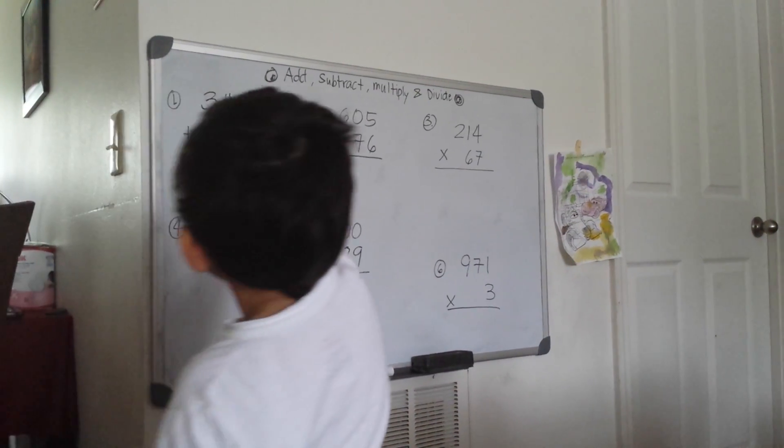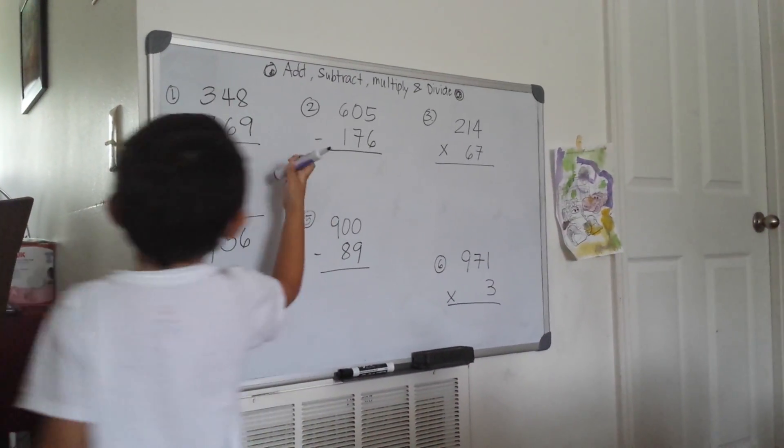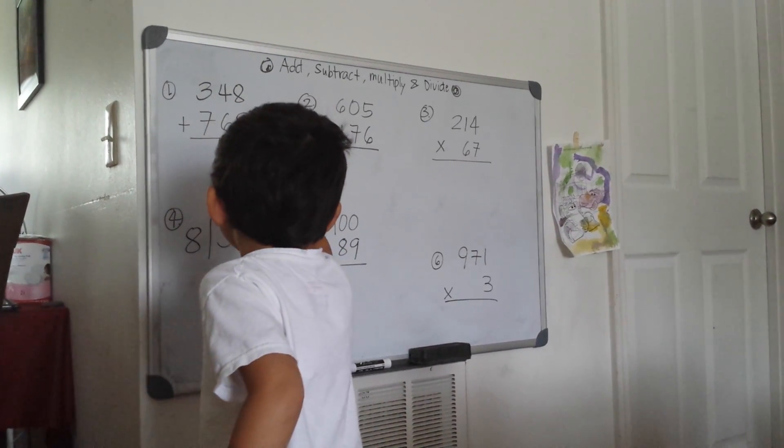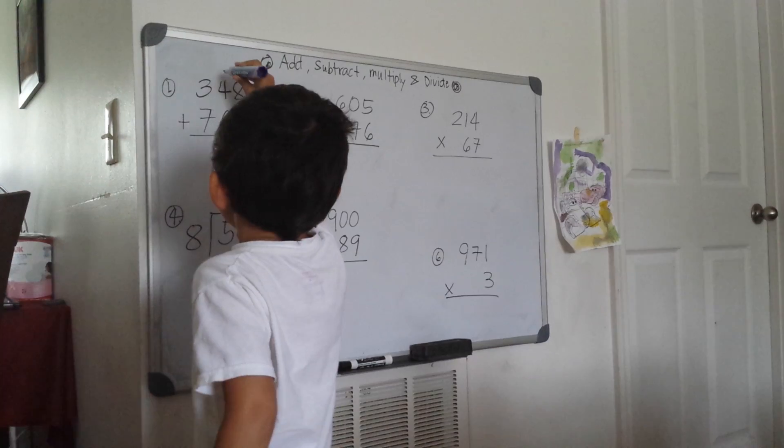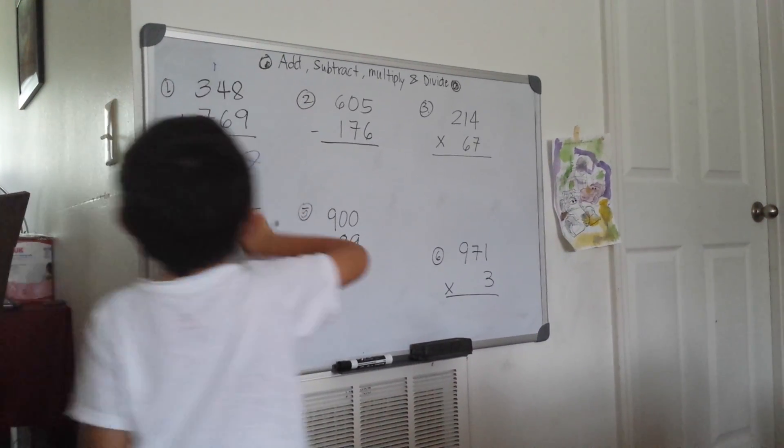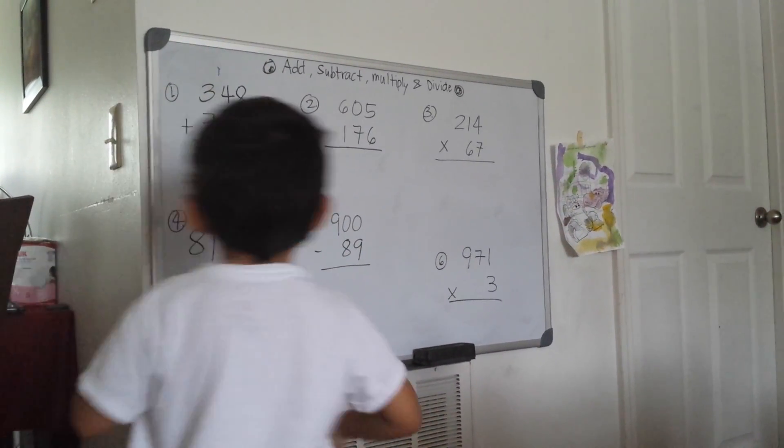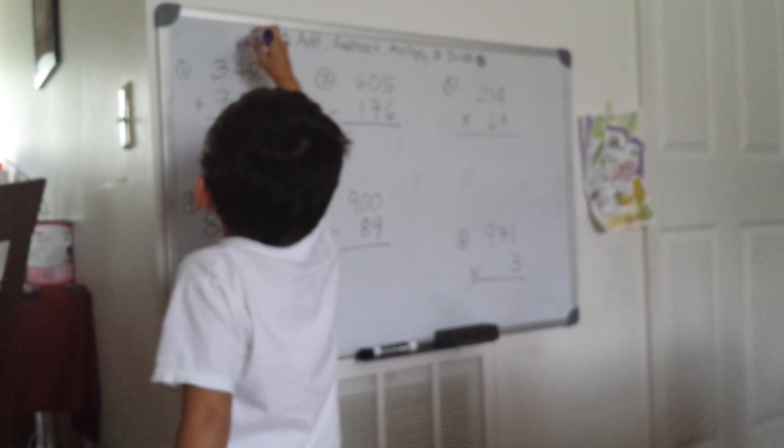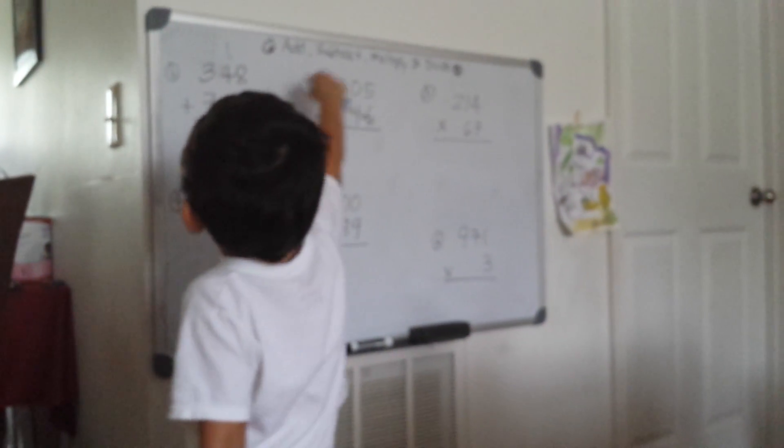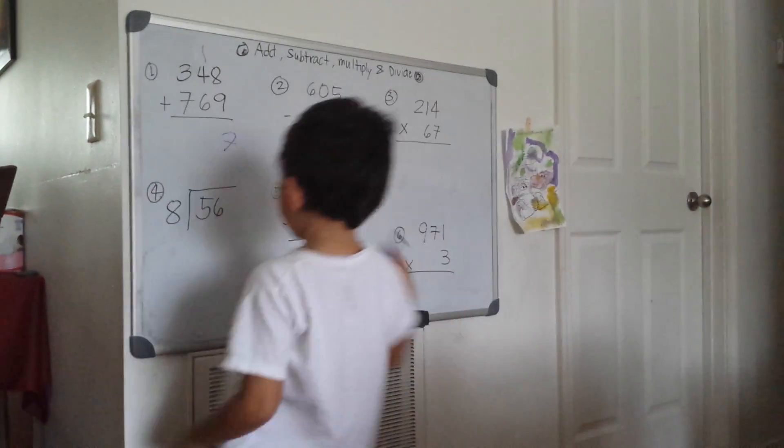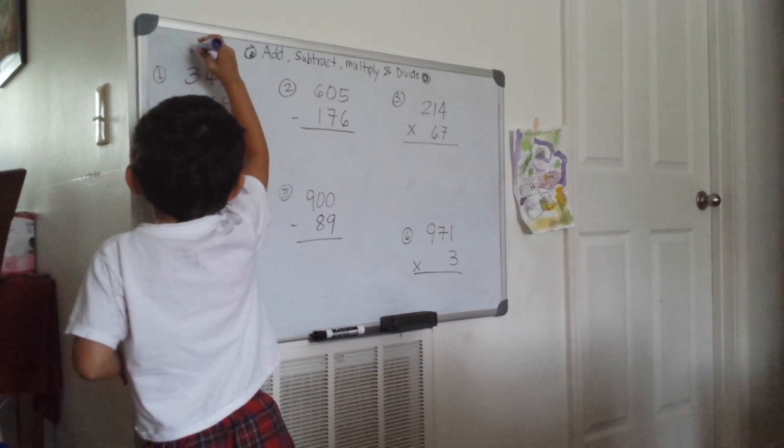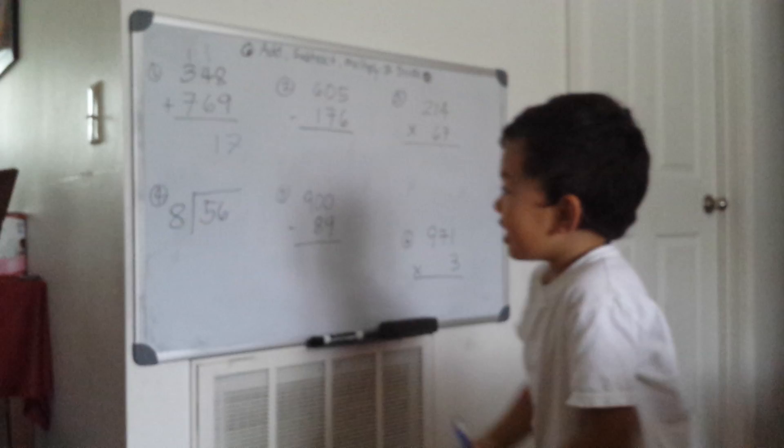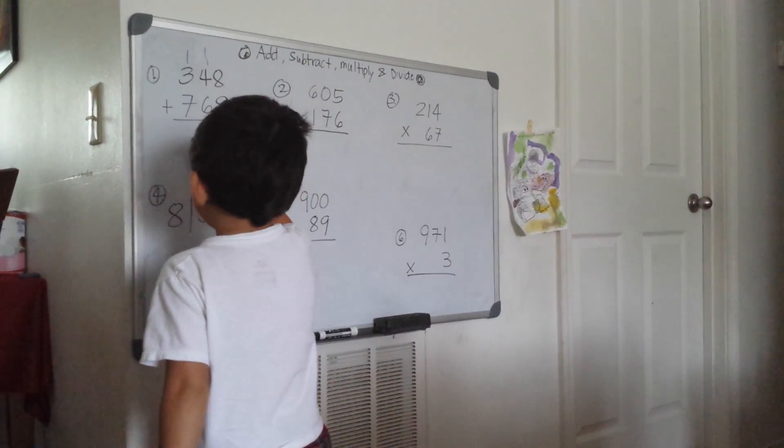Number 1: 348 plus 769. 8 plus 9 is 17, carry the 1. 1 plus 4 is 5, plus 6 is 11. 1 plus 3 is 4, plus 7 is 11. The answer is 1,117.